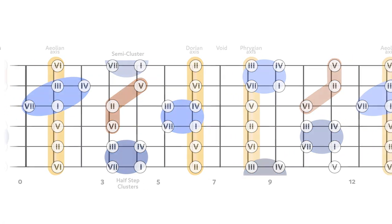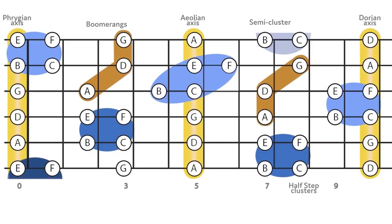Half-step clusters, axis frets, etc. These are all regions on the terrain of the guitar fretboard.